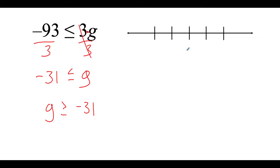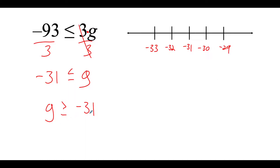I put negative 31 in the middle of the number line. As we go to the left numbers get smaller and to the right they get bigger. We want all numbers greater than or equal to negative 31 — we have the equals sign so we put a filled-in circle at negative 31, and then draw our arrow heading out to the right.